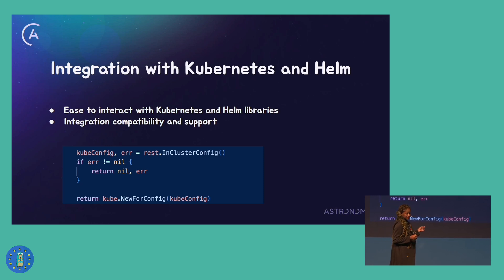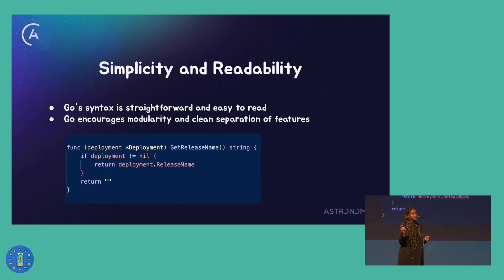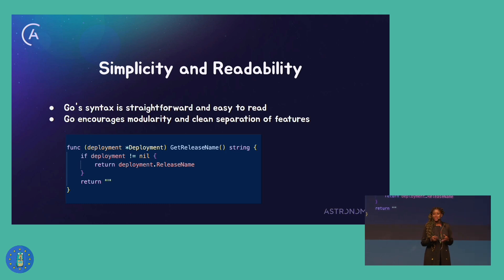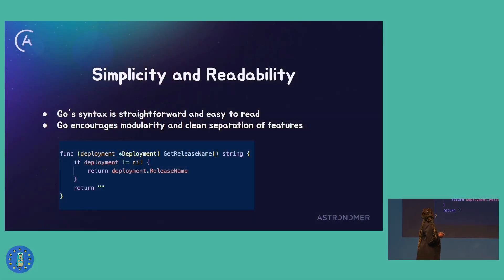This code example shows how to create Kubernetes clients to interact with the Kubernetes API server from within a pod running inside a Kubernetes cluster. Another reason we chose Go is its simplicity and readability. Go's syntax is straightforward and easy to read, making it an excellent choice for both new and experienced developers. It eliminates many complexities found in other languages, making it easier to maintain and scale, and it encourages modularity and clean separation of features. This code example shows a simple way to return a release name from a deployment.